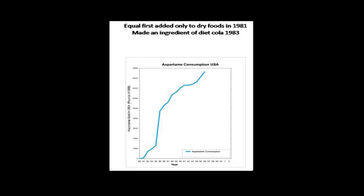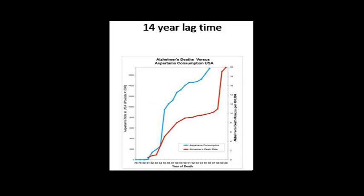What I did next was plot the consumption of aspartame — you'll see this curve a lot. Look how steep the increase is when carbonated beverages had aspartame added. Now we'll combine both curves. You see this steep increase in consumption of aspartame, and you'll see the mirror image of that about 14 years later.